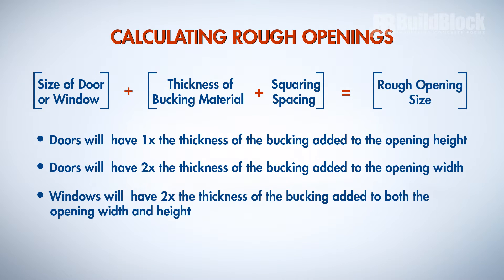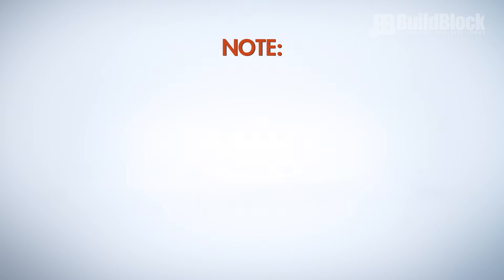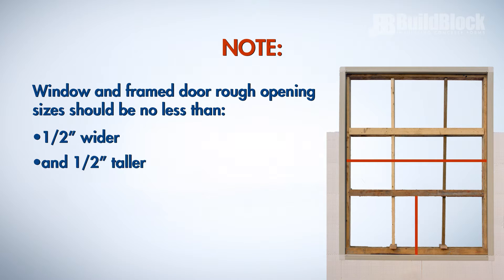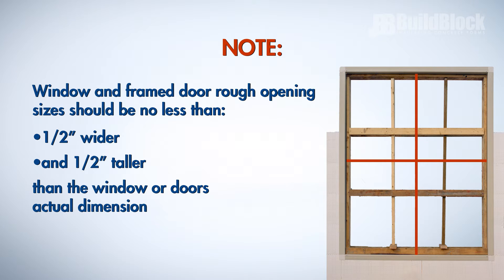Windows will have two times the bucking thickness added to both the opening width and height. Note, window and frame door rough opening sizes should always be no less than one half an inch wider and half an inch taller than the window or frame door's actual dimensions, to account for the window or door to be plumb and square, even if the opening moves slightly during construction of the walls.